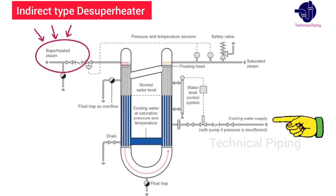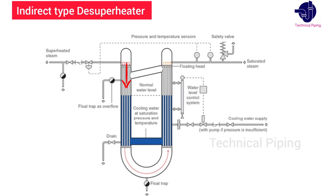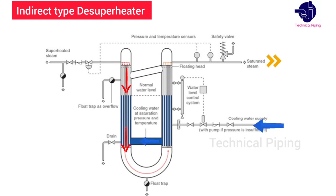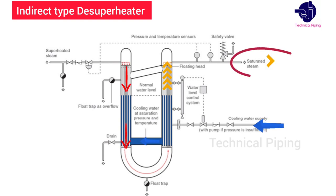As the steam moves through the tubes, it loses some of its heat to the cooling medium. Therefore, the temperature of the steam coming from the tube outlet side decreases.